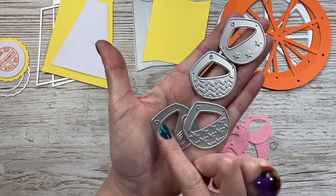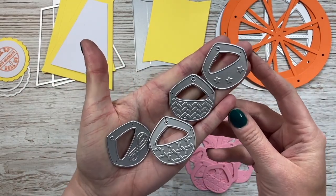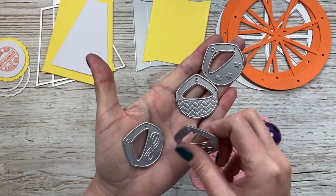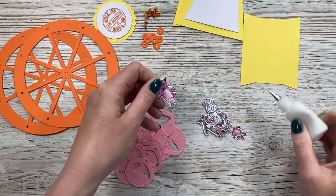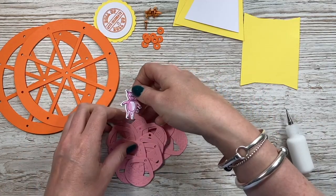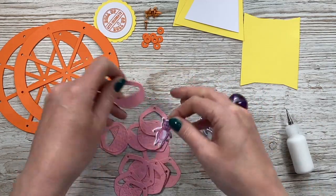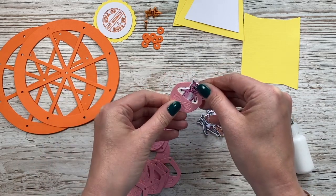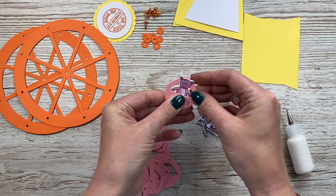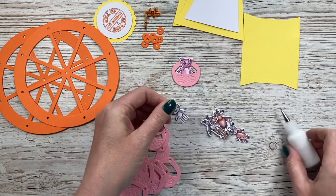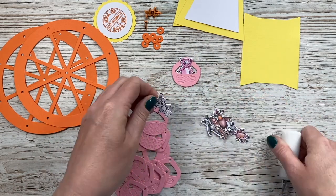I've also die cut double, so I've die cut 16 of the baskets. The reason being is you obviously want to put eight on the front and then I need to cover the back so it just looks nice from the back. You can see here I've got my eight little critters I'm popping them in the front and then I'm going to use the other one to stick on the back.